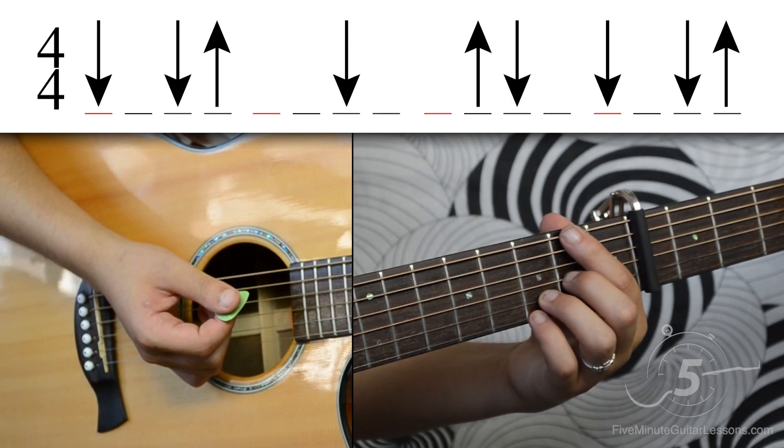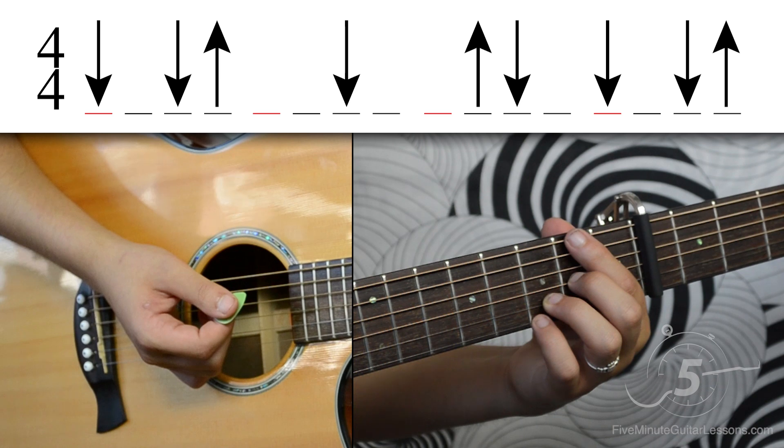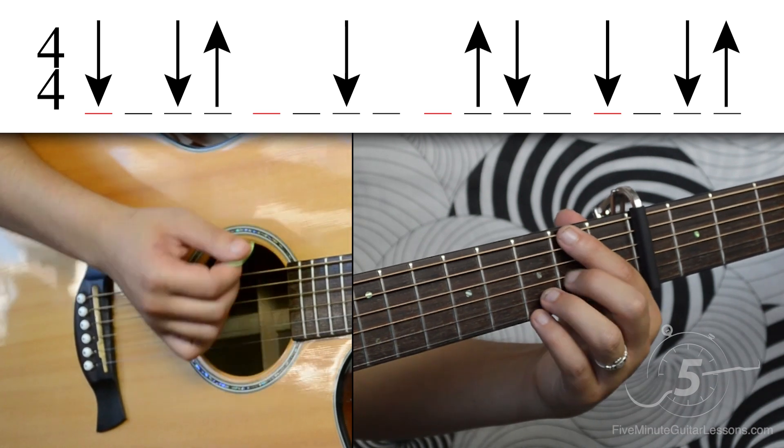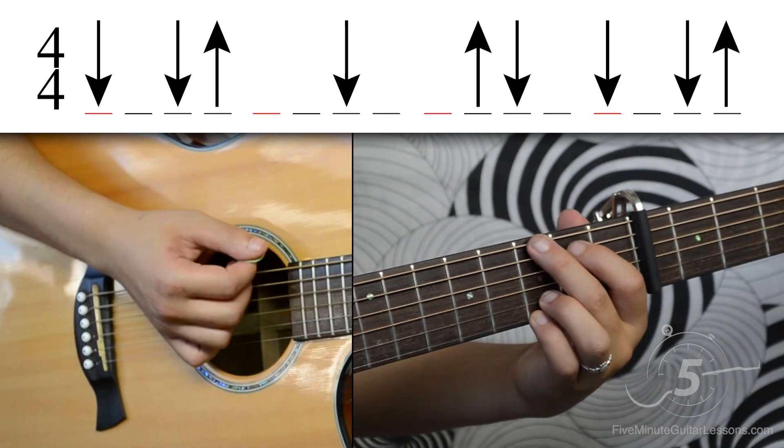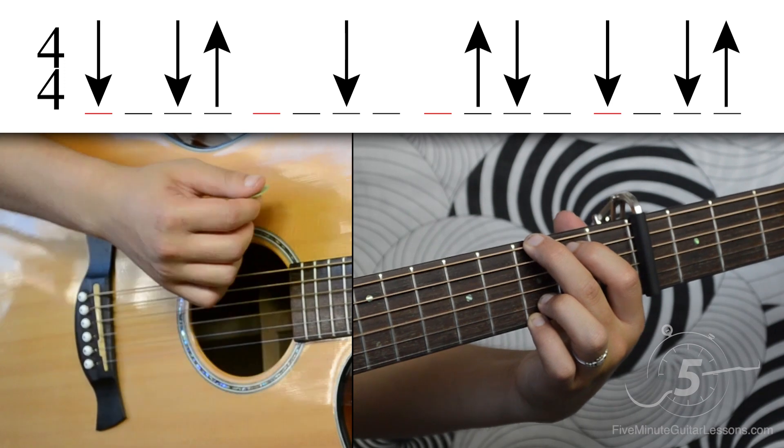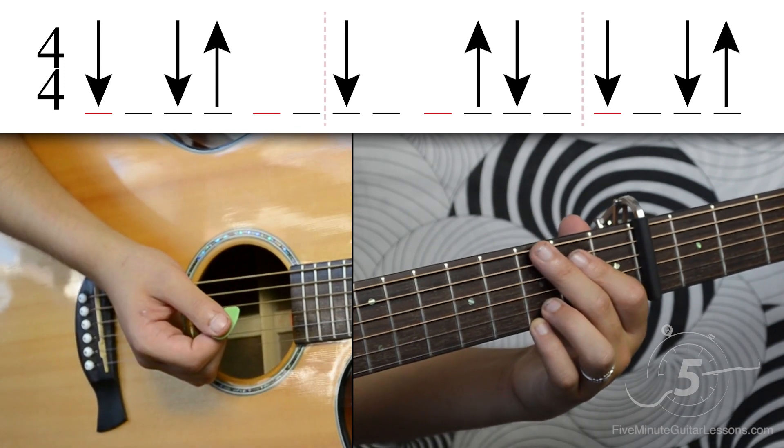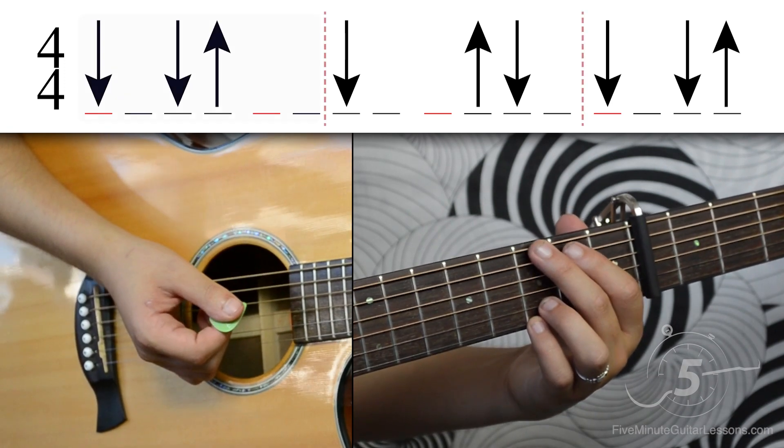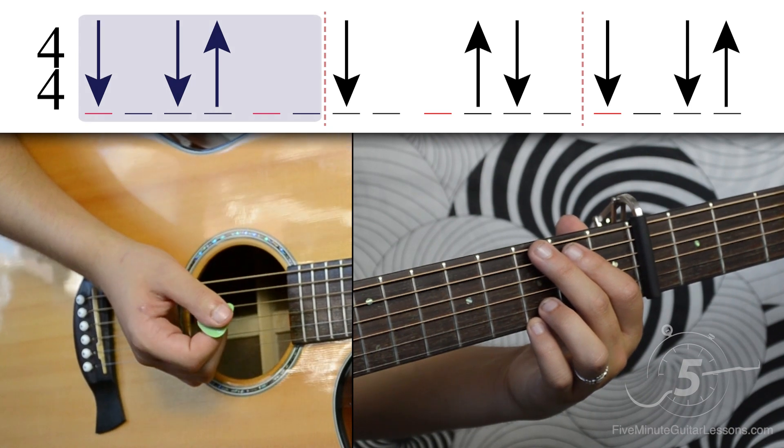The strumming pattern goes down, down, up, down, up, down, down, down, up. We can divide that into three parts. The first part would go down, down, up.